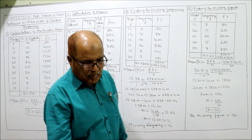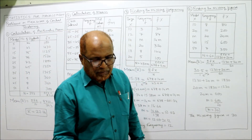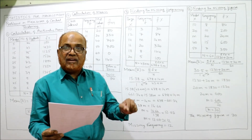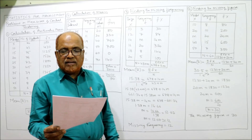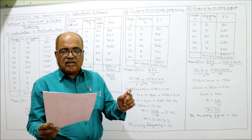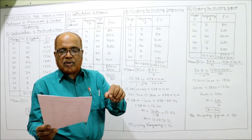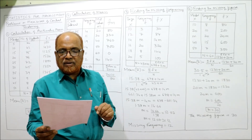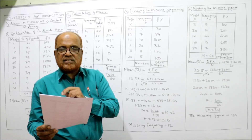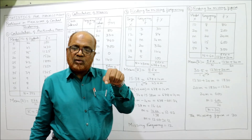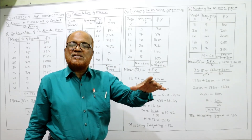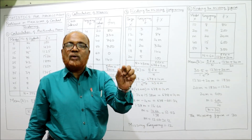Fourth problem: 'The arithmetic mean of the following series is 30.5 — find the missing figure.' Here the missing figure is a mark (X value), not a frequency. Marks given are 10, 20, question mark, 40, 50 and all frequencies are given: 8, 10, 20, 15, 7. Unlike the previous problem where frequency was missing, in this problem the X value is missing.